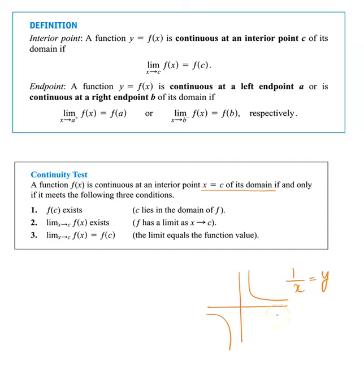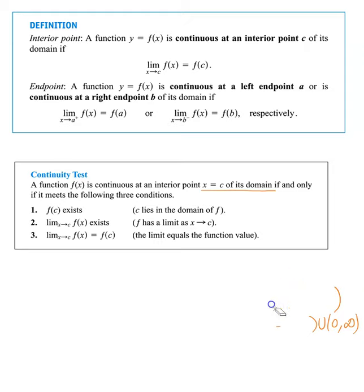For y = 1/x, the domain goes from negative infinity to zero, union zero to infinity — the domain itself eliminates zero, because when x = 0, 1/0 is undefined. So the domain is what makes the function defined, automatically eliminating values that make it undefined. Therefore, for this rational function over its domain, it is continuous. Don't just go by the visual and say it's broken — the definition makes the role of the domain very clear.